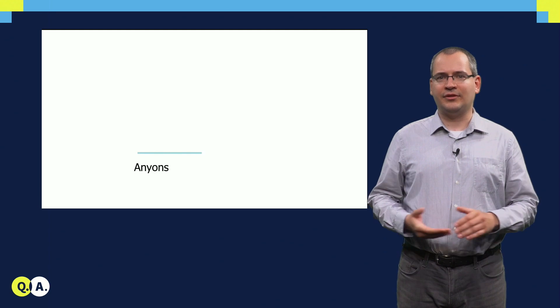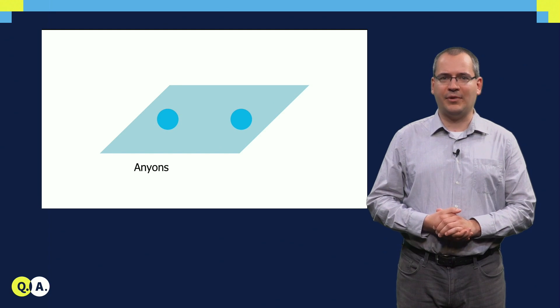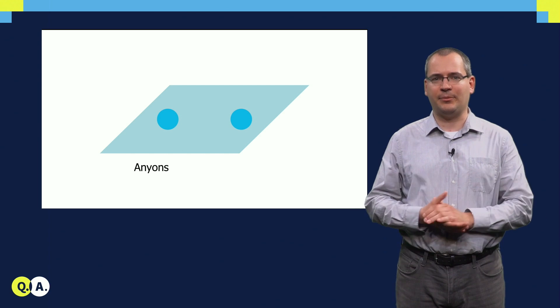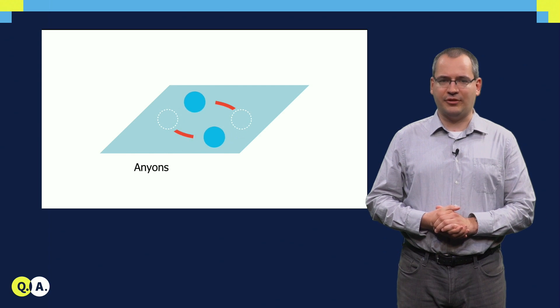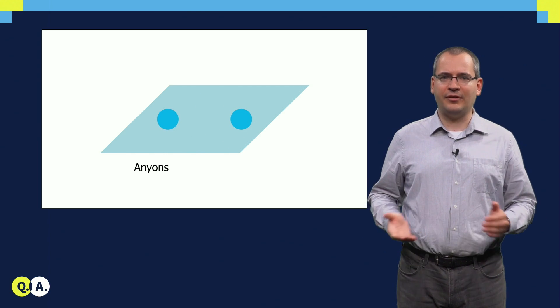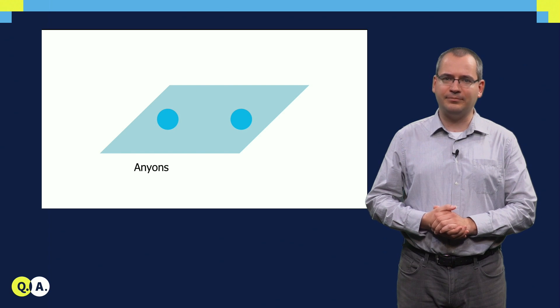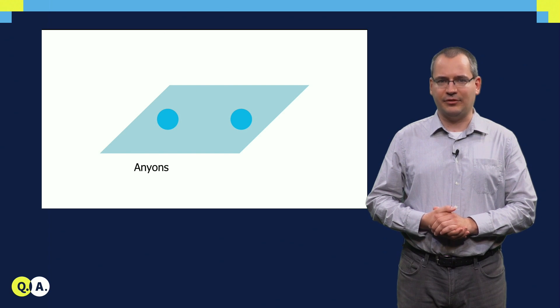In two dimensions, this picture changes dramatically, because particles can keep track of how many times they were exchanged around each other. Therefore, we lose the previous restriction of alpha, which only allowed for two types of elementary particles.